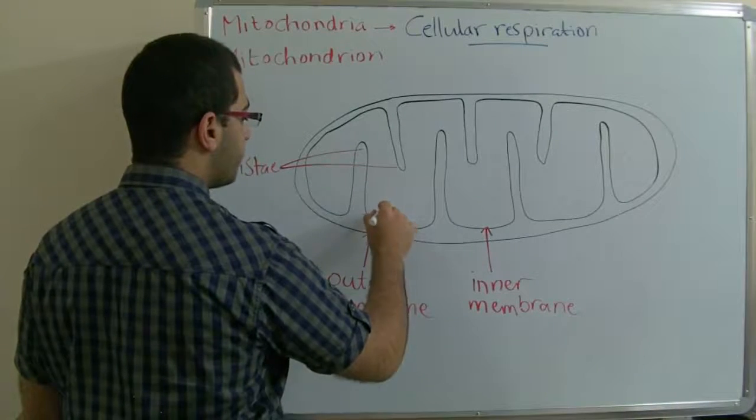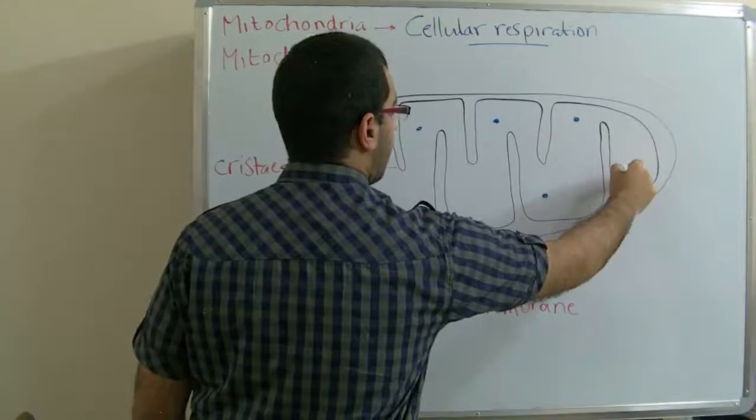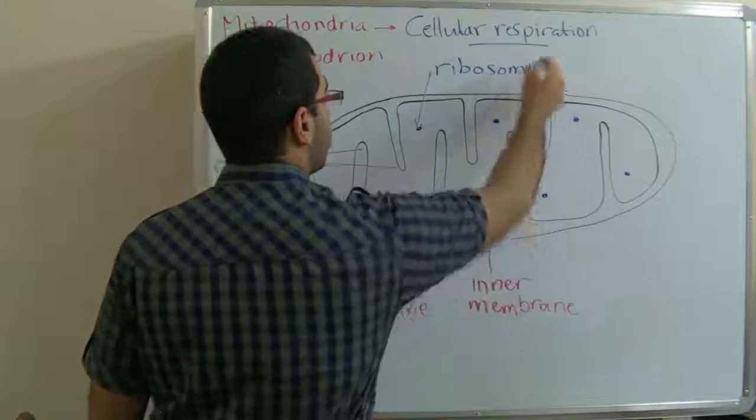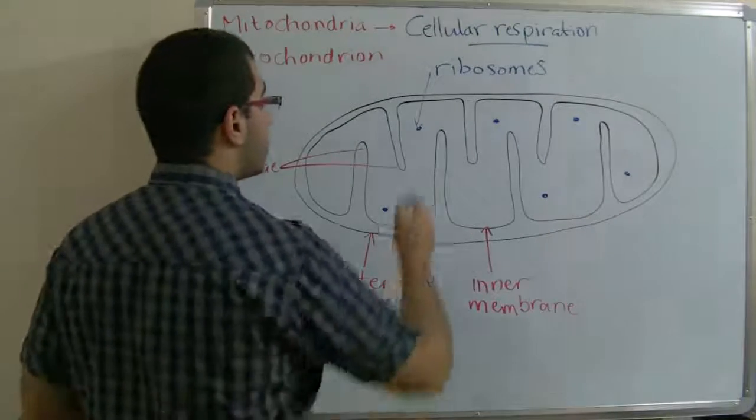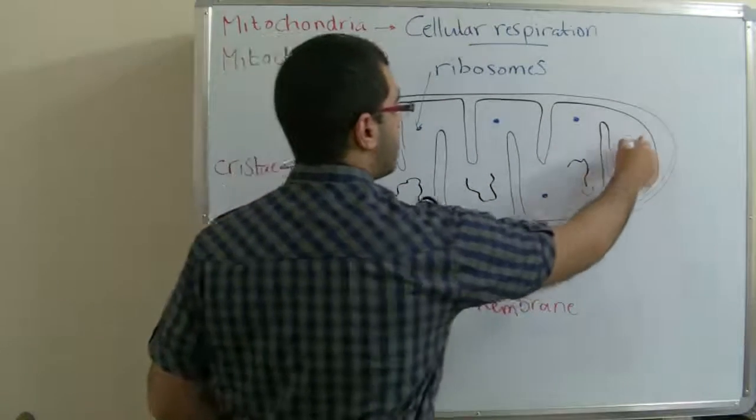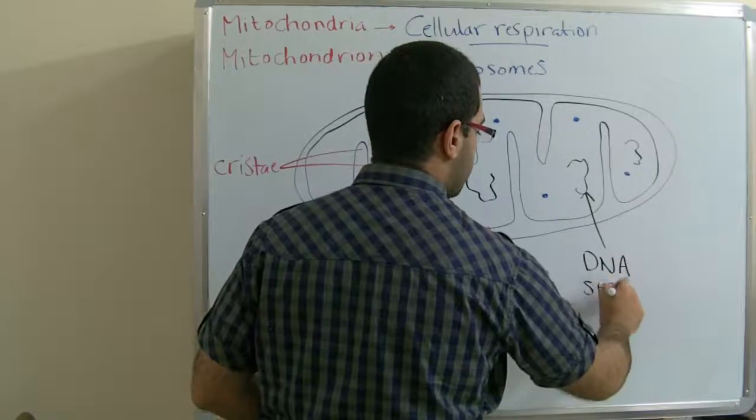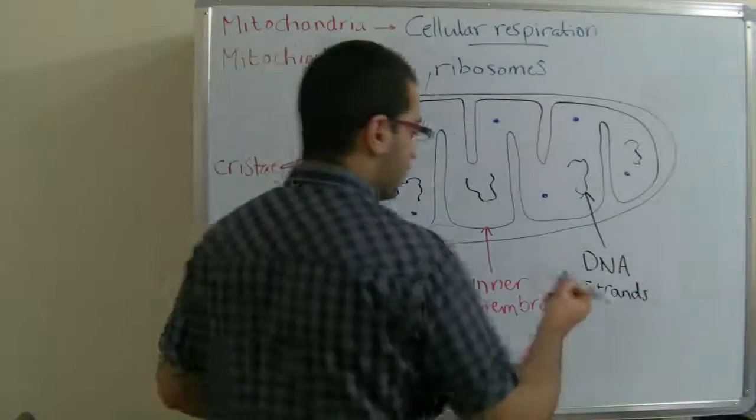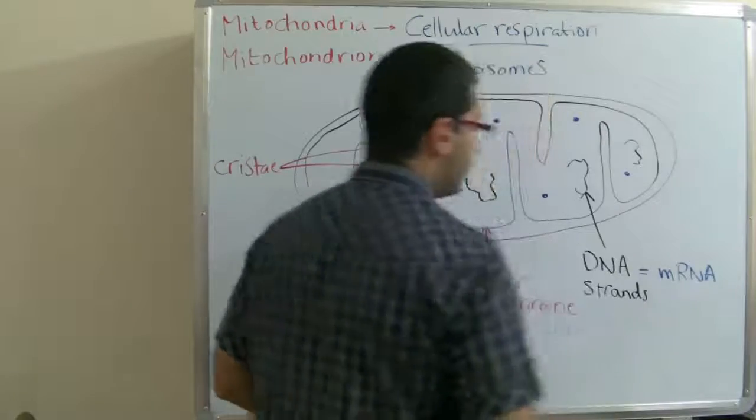Here we have ribosomes for the protein synthesis, for manufacturing the proteins. And as the proteins are manufactured, we shall have some DNA strands, which the ribosomes can use the mRNA in order to transcribe the proteins.